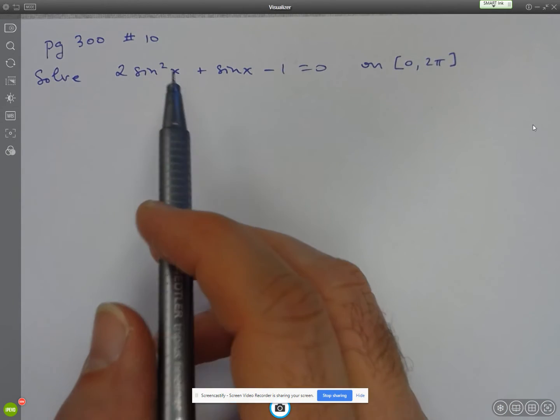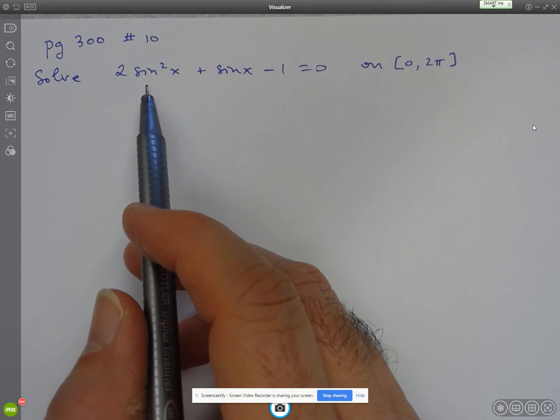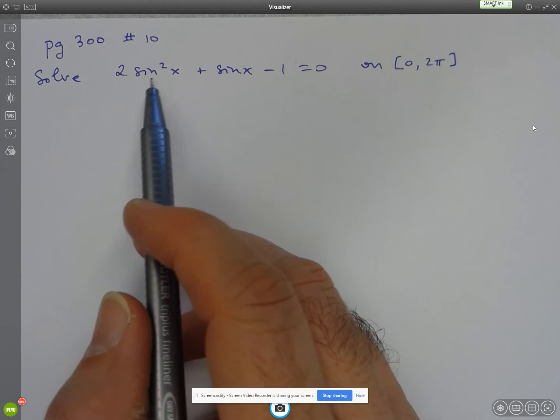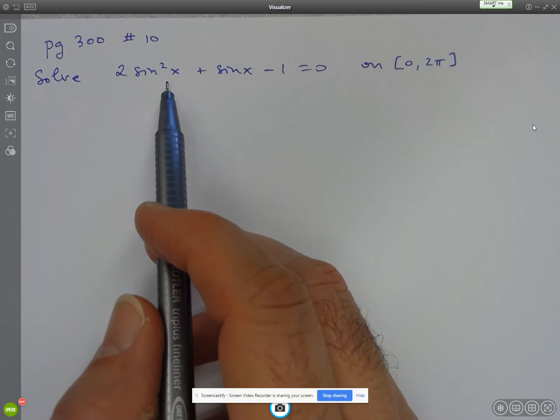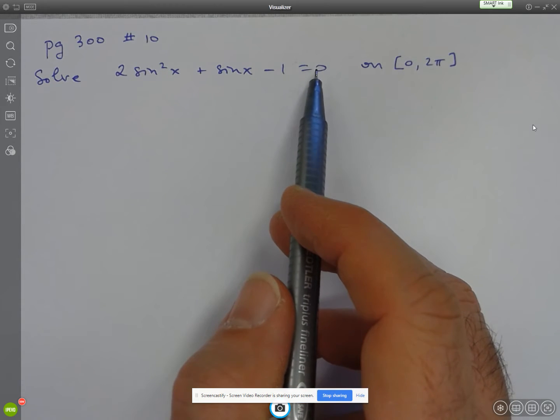Okay, so hopefully you recognize this as looking like a quadratic trinomial. So I'm going to factor the left-hand side as a trinomial. Right-hand side already has got 0 on the other side.